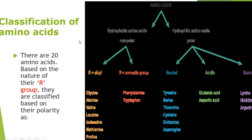Moving to the classification of amino acids: there are 20 amino acids, and these are classified into different classes depending on different aspects. The first classification is based on the nature of the R group — whether it is an alkyl group or an aromatic group. The second classification is based on polarity. The third is based on essentiality.